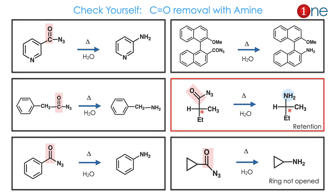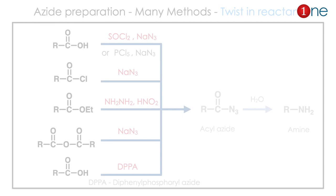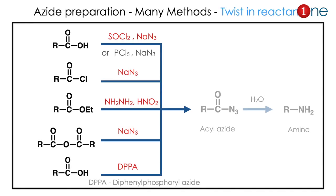The important example I want to mention is the fourth example — retention of configuration. Here the migrating group is chiral; after migration you'll have the same configuration. I also have to warn you about a real twist: the reactant can be synthesized from many reactants and many reagents.